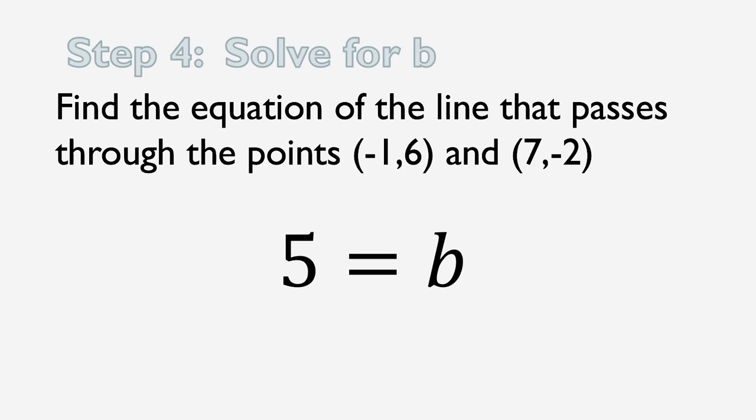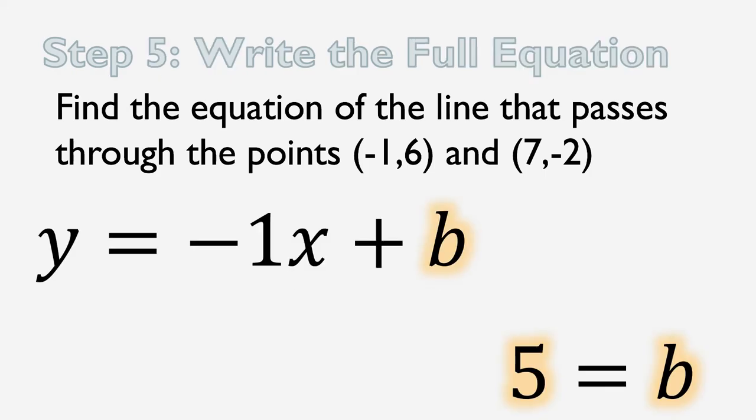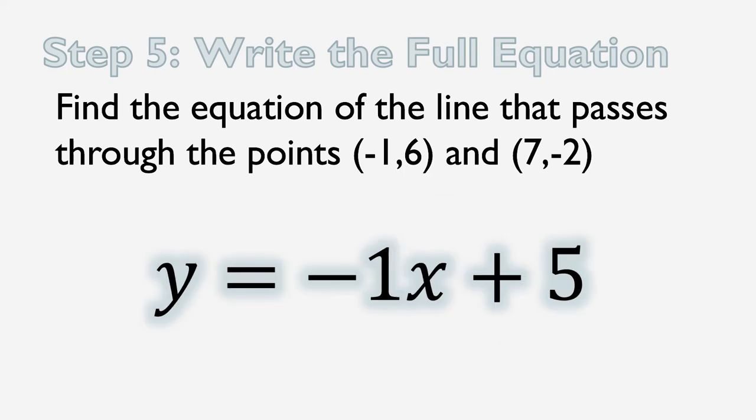So we've got the slope. We've got b. We have all the ingredients we need to write the equation of the line. Which is going to be y equals negative 1x plus 5. Now, you don't need this negative 1. You could just make it negative x if you want. You could leave the 1 out.